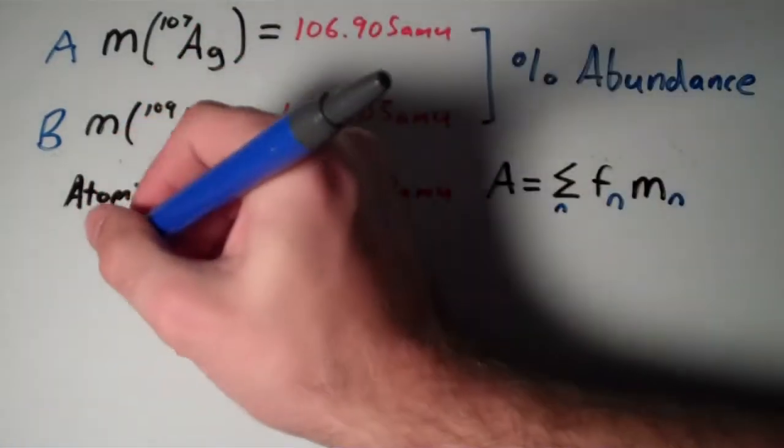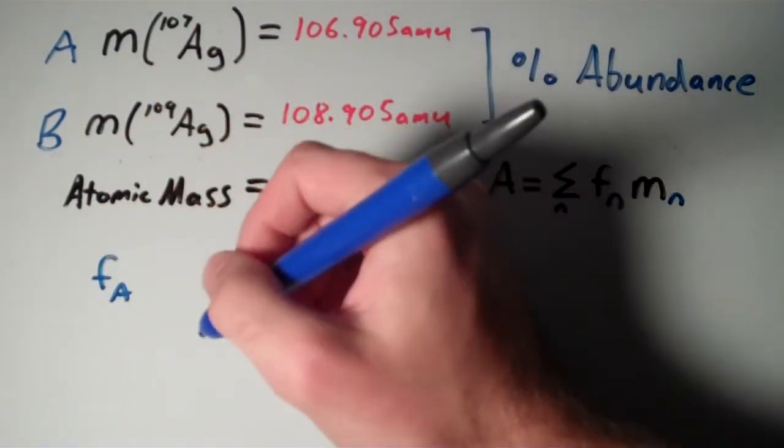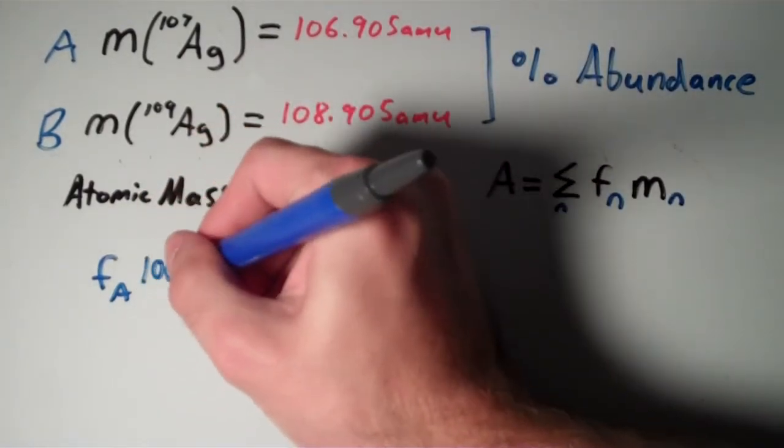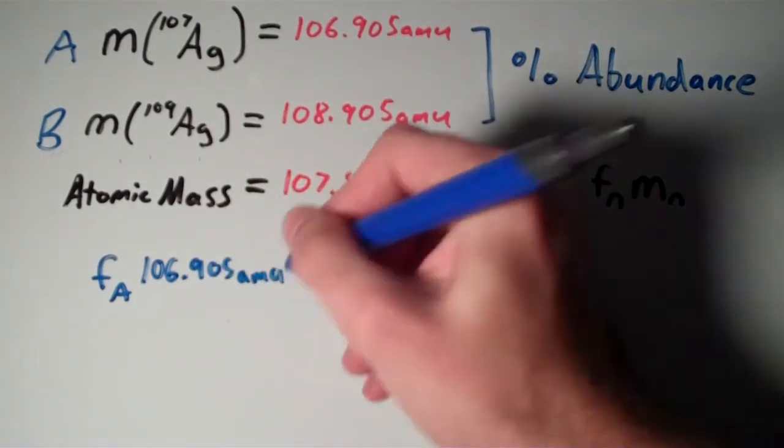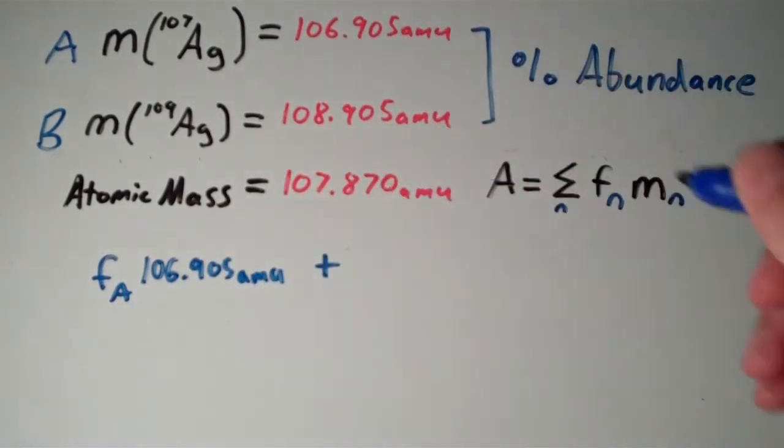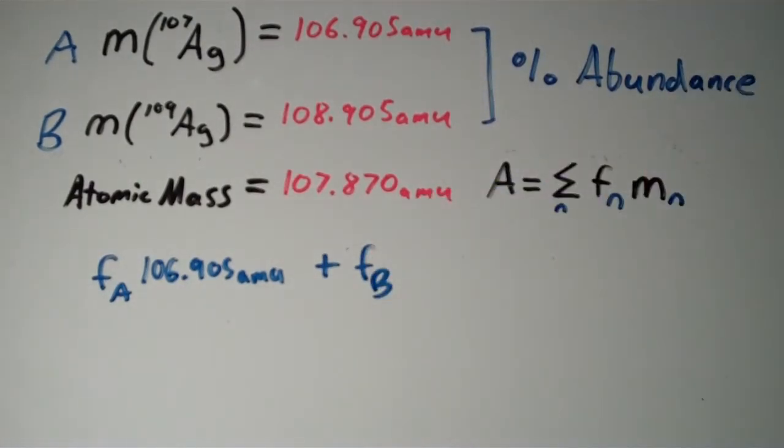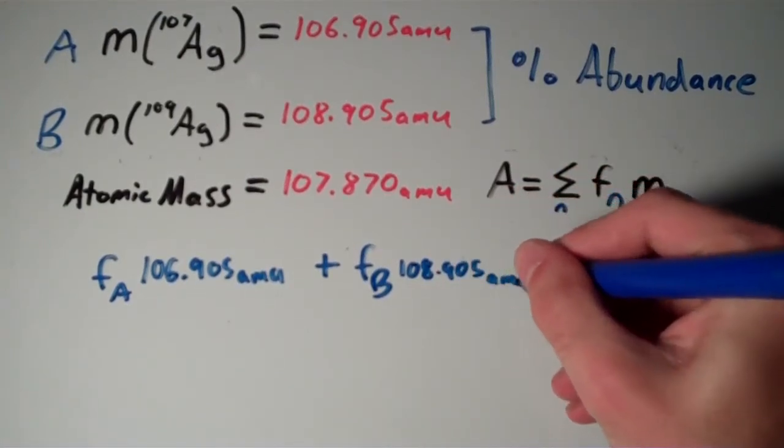Let's go ahead and apply this formula to the problem with the information given. If I have the fraction of A and I multiply that by the mass of A, so 106.905 AMU, and I add to that the product of the fraction of B times the mass of B, which is 108.905 AMU.